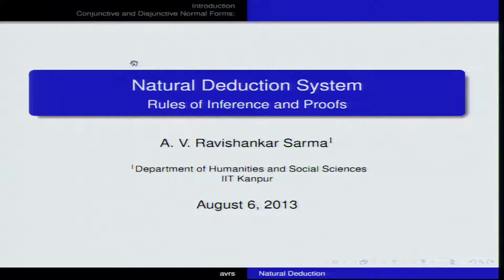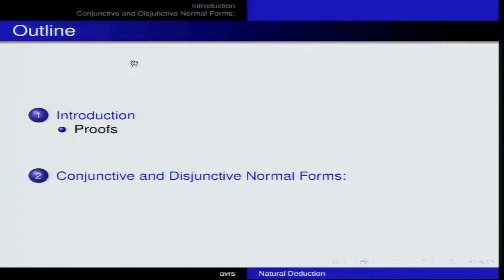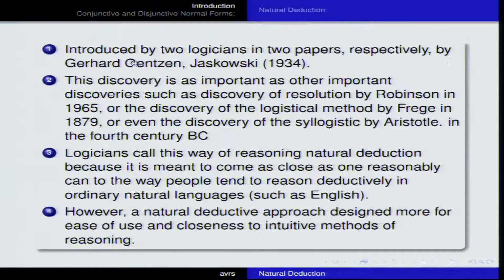The outline of this lecture: first we will talk about what we mean by natural deduction, then consider some examples of important proofs — proofs of some theorems. We will also talk about conjunctive and disjunctive normal forms a little bit later, but first we will focus our attention on natural deduction.